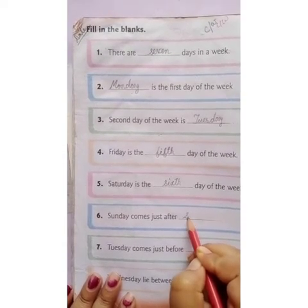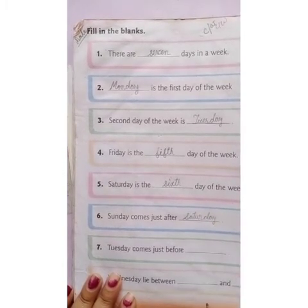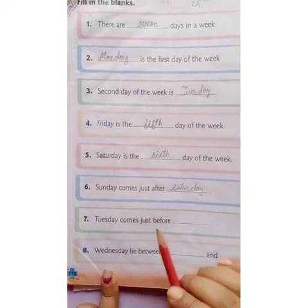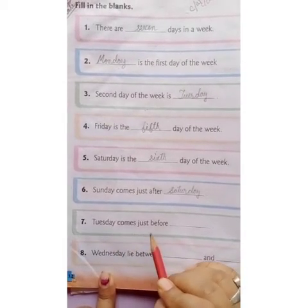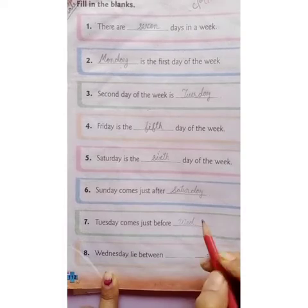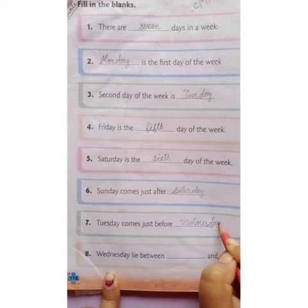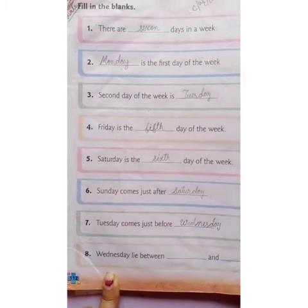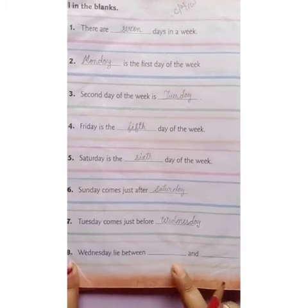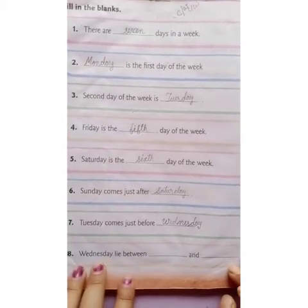Number seven: Tuesday comes just before which day? Yes, it's Wednesday — w-e-d-n-e-s-d-a-y, Wednesday. Number eight: Wednesday lies between dash and dash. You have to write which day comes before Wednesday and which day comes after Wednesday.